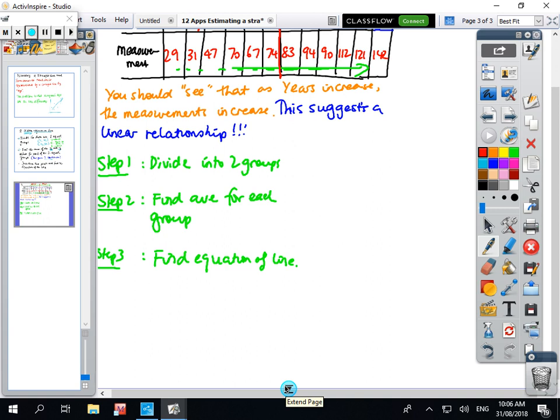So in the first group, the x average is 1 plus 2 plus 3 plus 4 plus 5 plus 6 over 6, so the average is 3.5. And I want you to find the average of those six y numbers. Pause the tape for a second and then come back when you're ready. Okay so you're back and the average was about 53.